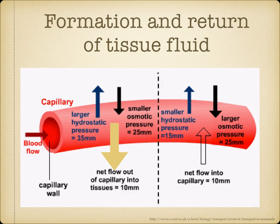Looking at this diagram: on the left, blood arrives at the capillary from the arteriole, under a higher hydrostatic pressure compared to the small osmotic pressure outside. This means at the arterial end of the capillary, tissue fluid flows out. The difference in pressure is about 10 mmHg. Then as blood flows towards the venous end, the hydrostatic pressure reduces, so the osmotic pressure outside is higher, and tissue fluid flows back into the capillary.